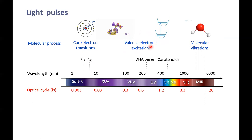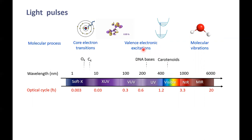Within the same family — for example valence electronic excitations — there are also differences. Carotenoids, which are molecules involved in photosynthesis, absorb at 530 nanometers, while DNA bases absorb at around 270 nanometers in the UV. So if I want to study the molecular dynamics of carotenoids, I need a pulse in the visible. If I want to study the dynamics of DNA, I need a pulse in the UV, and so on.